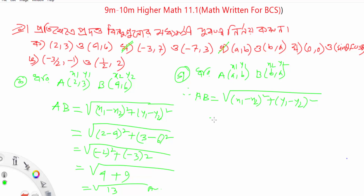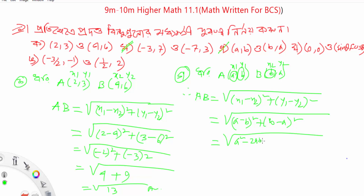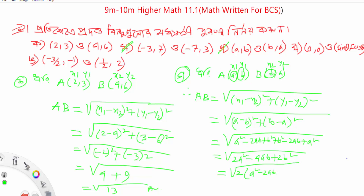We get (x1 minus x2) squared plus (y1 minus y2) squared. Expanding: (a minus b) squared plus (b minus a) squared equals a squared minus 2ab plus b squared, plus b squared minus 2ab plus a squared. Finally, this gives 2a squared minus 4ab plus 2b squared.